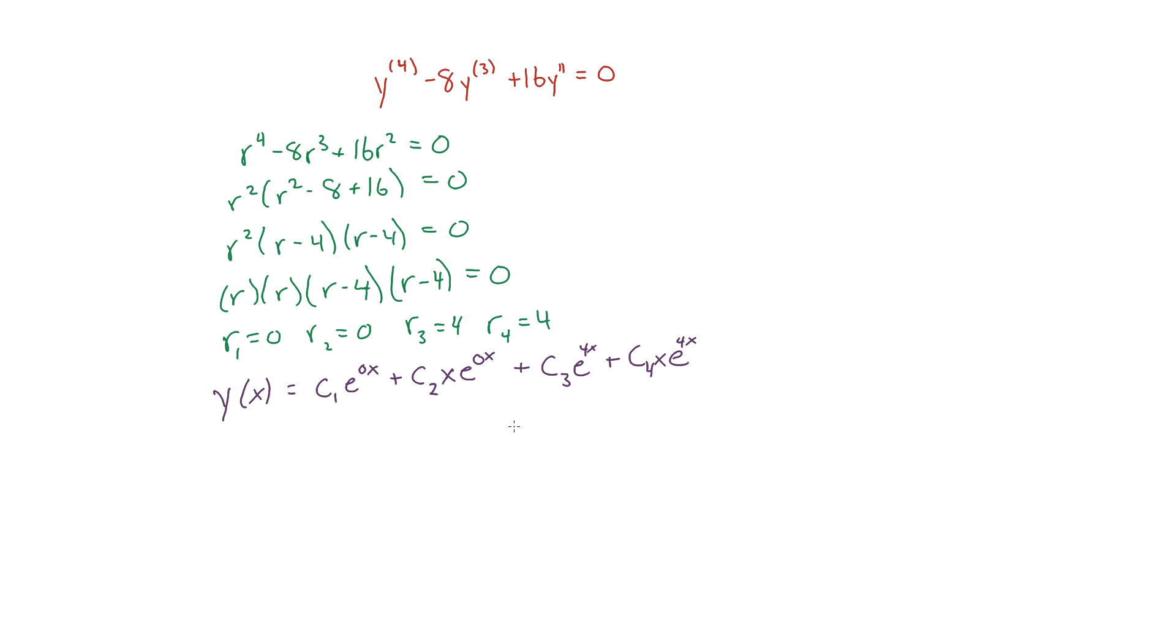Let's say you had a higher order of multiplicity, say three. The next term would be plus c3 x squared e to the zero x. So after each successive term, the power of the x term increases by one for every repeated root.